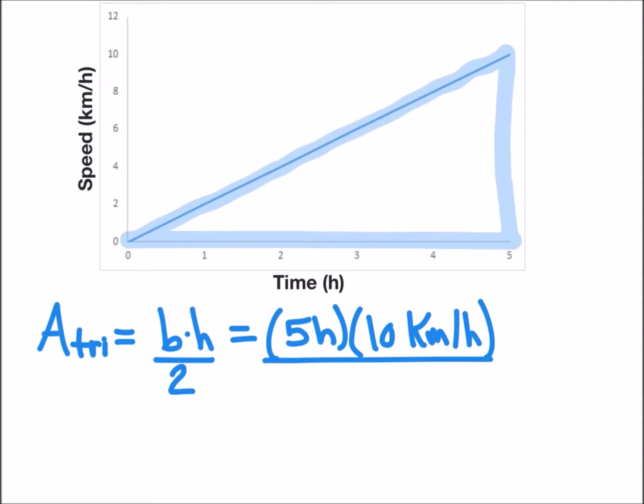We're going to multiply that by a height of 10 kilometers per hour and divide everything by two. Now we can cross out hours, as hours divided by hours will cancel, and our equation can be simplified to area equals 50 kilometers divided by two, or area equals 25 kilometers.